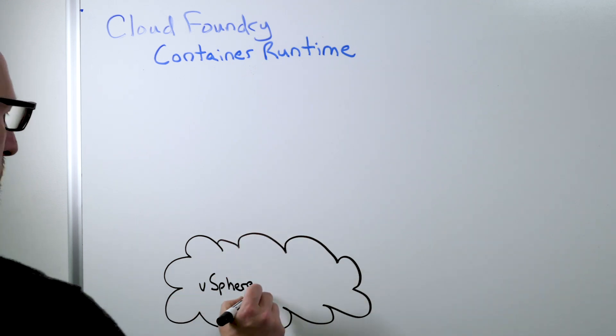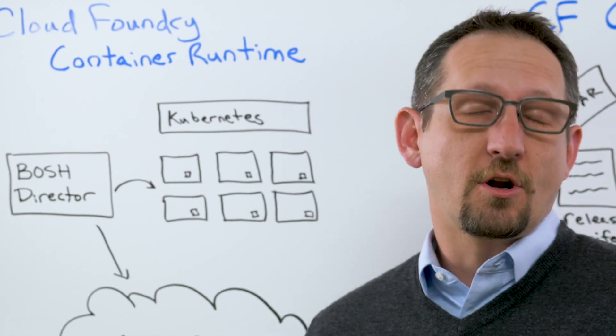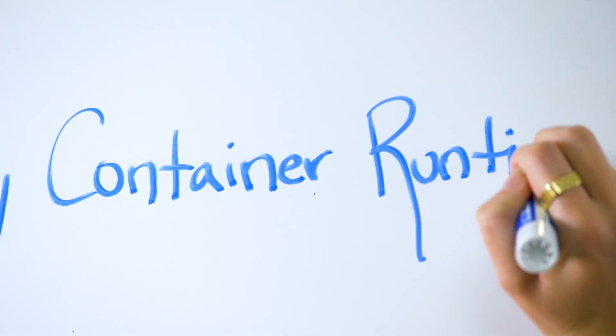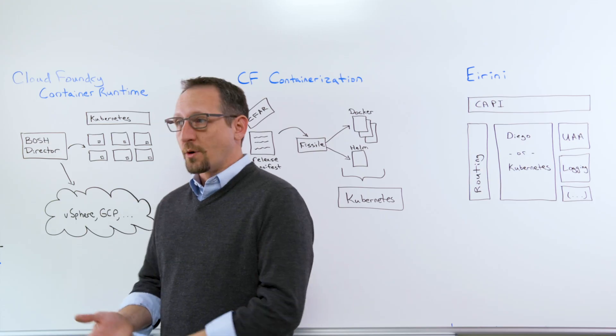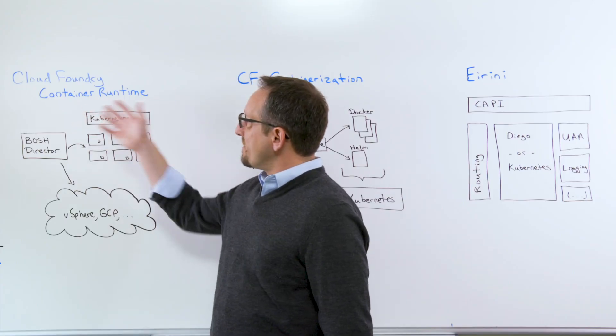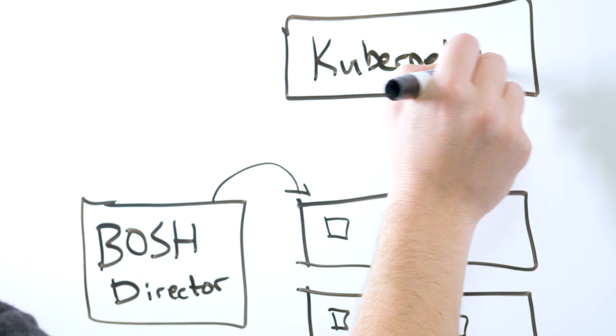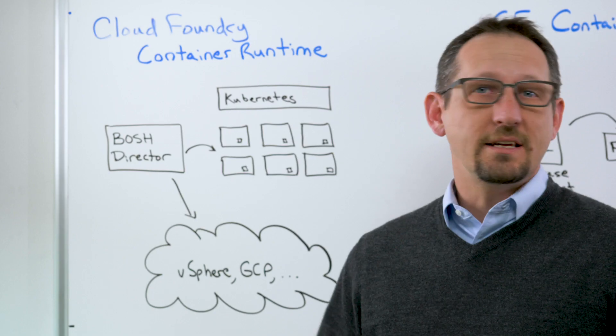So the first project is the Cloud Foundry Container Runtime. This is a project that Pivotal and Google started initially together. They called it Kubo back then. VMware quickly got involved, and since then it joined the Cloud Foundry Foundation as an incubating project. The whole goal of the Cloud Foundry Container Runtime is to make deploying, managing, and upgrading Kubernetes easy on any cloud.